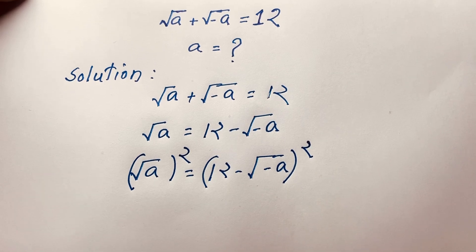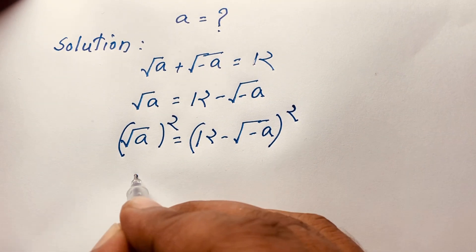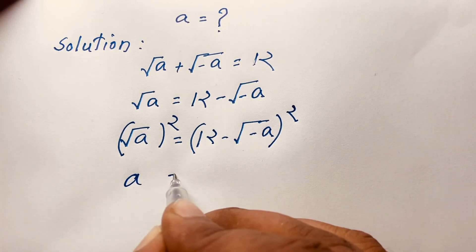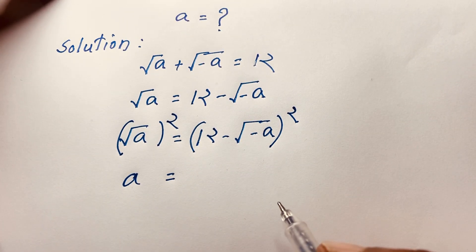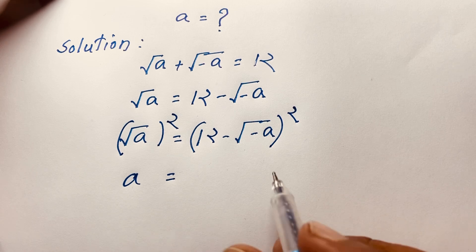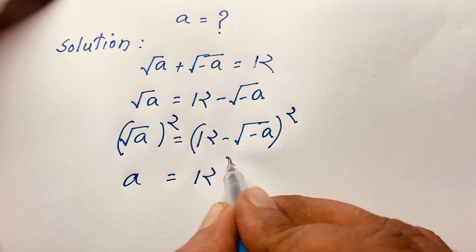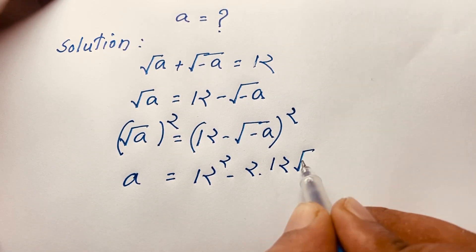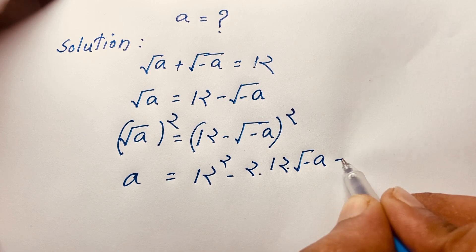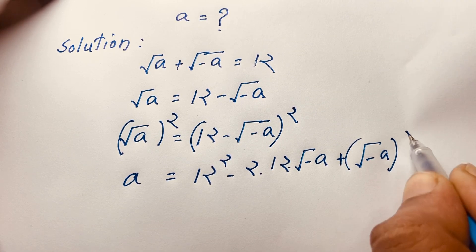Square root A is equal to 12 minus square root negative A, and I use both sides whole square. The square root is cancelled. So it will be A is equal to... We know that (A minus B) whole square equals A squared minus 2AB plus B squared. According to this law, it will be 12 squared minus 2 times 12 times square root negative A plus square root negative A whole squared.